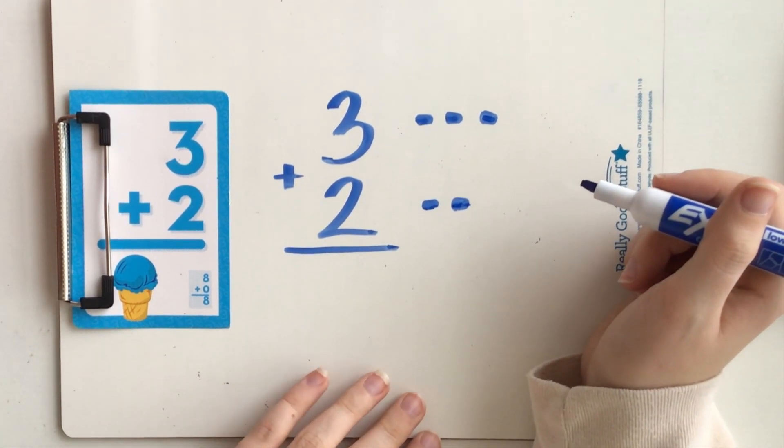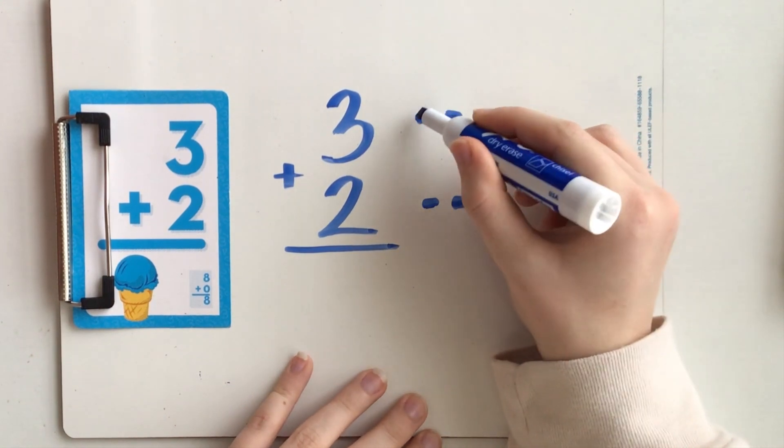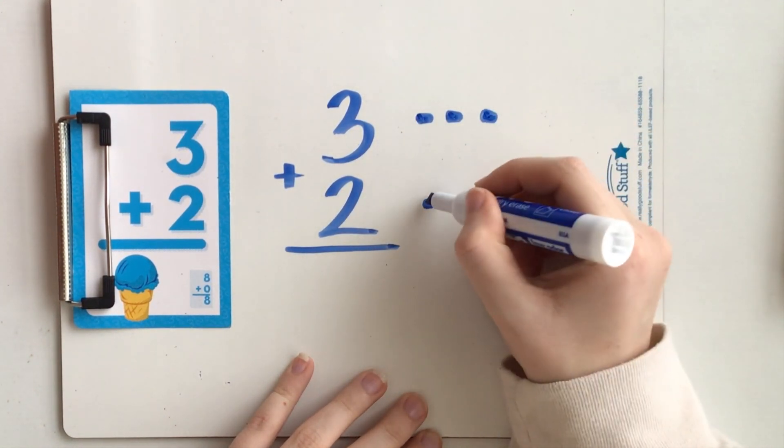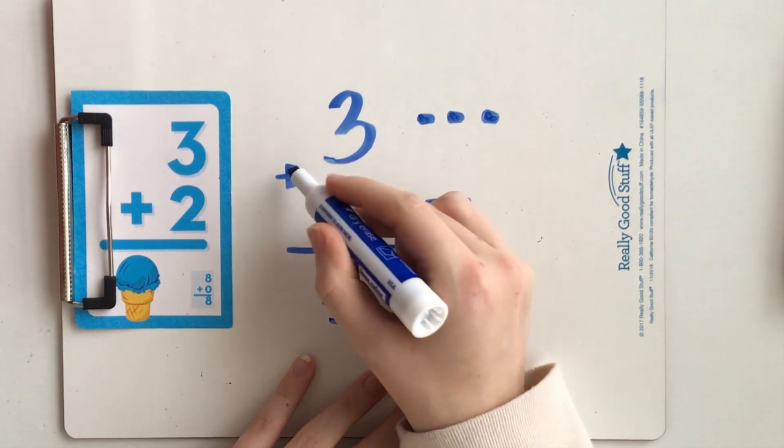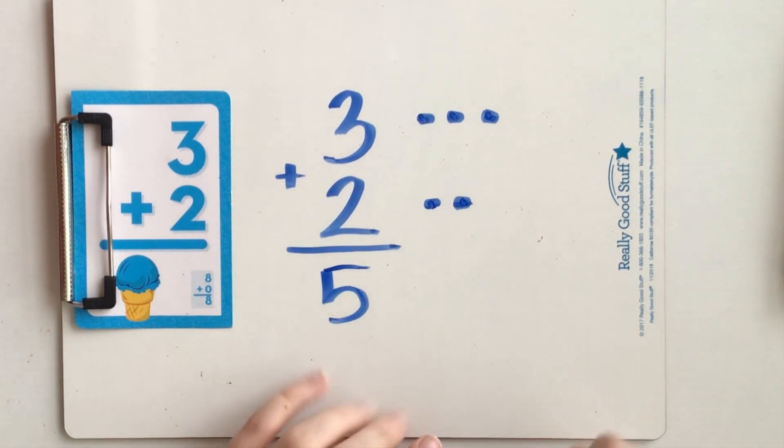Now I'm going to add up all of my dots together. One, two, three, four, five. Three plus two equals five.